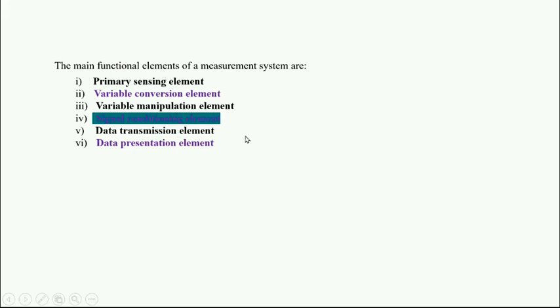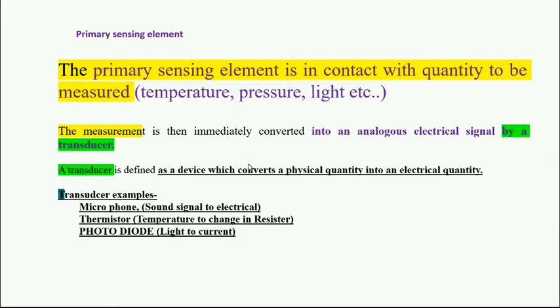The primary sensing element is always that which is in contact with the quantity to be measured. For example, we have to measure temperature, pressure, light intensity, so we are going to use a transducer. A transducer converts the physical quantity into electrical quantity. Some examples are: microphone - it converts sound signal, sound is a physical quantity to electrical signal. Thermistor - temperature is a transducer, so temperature changes the resistance. Photodiode - light intensity is converted into current, light to current.